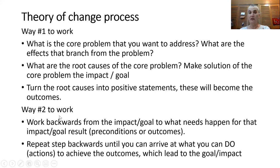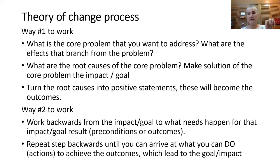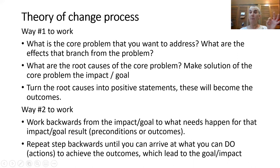A second way of developing a theory of change is to start with the goal or impact you want to have, and then work backwards to what needs to be in place for that goal to come about. These preconditions are also called outcomes. You repeat that process because there might be other things that need to be in place for the first set of preconditions to be possible, and you work backwards until you get to the actions you can take to help bring about this chain of events.